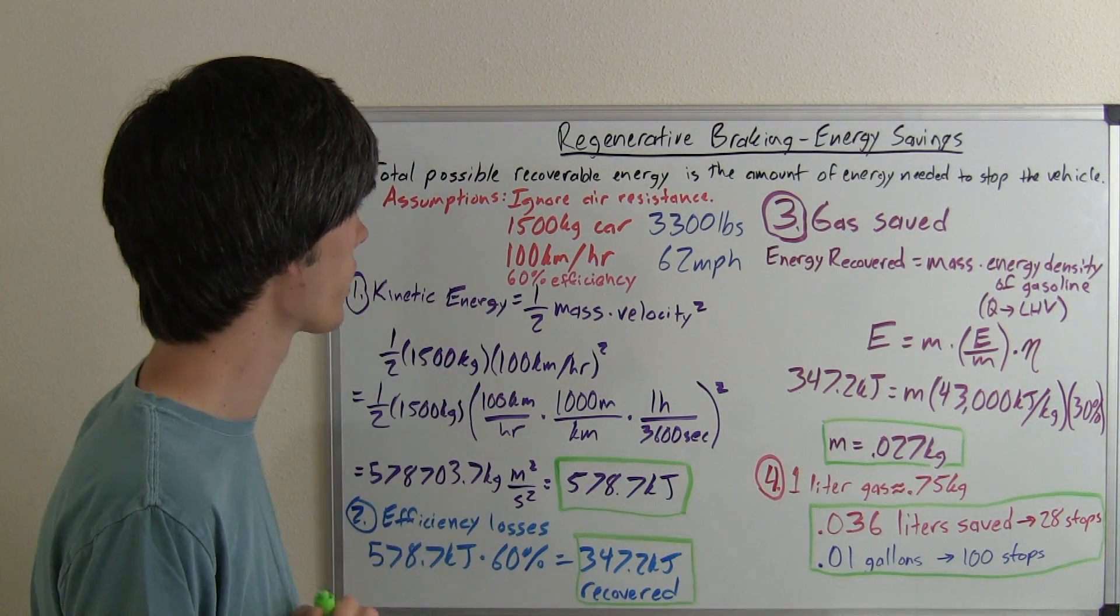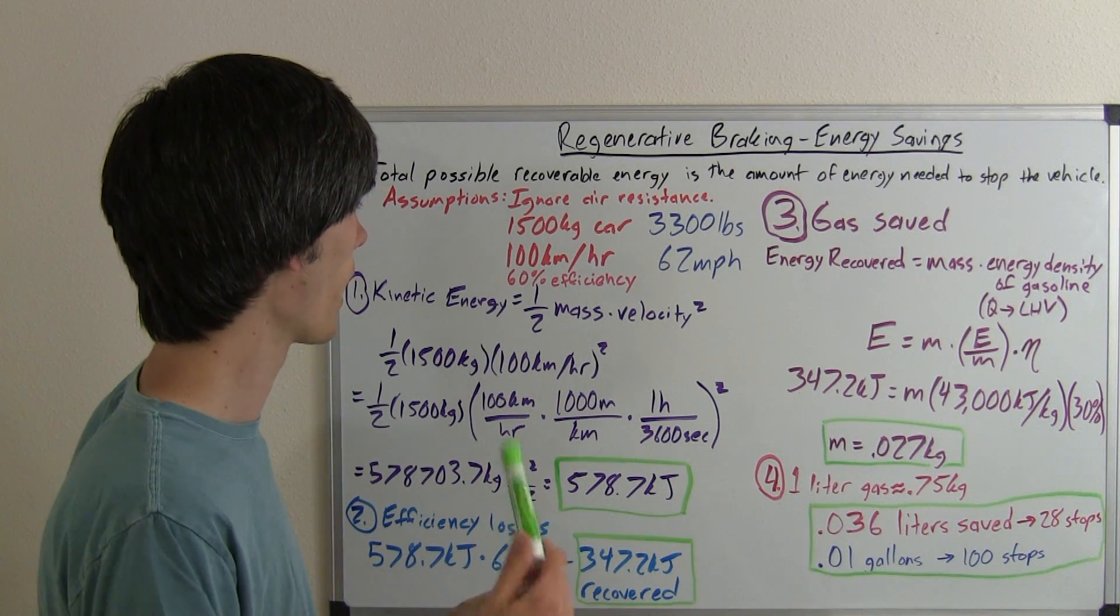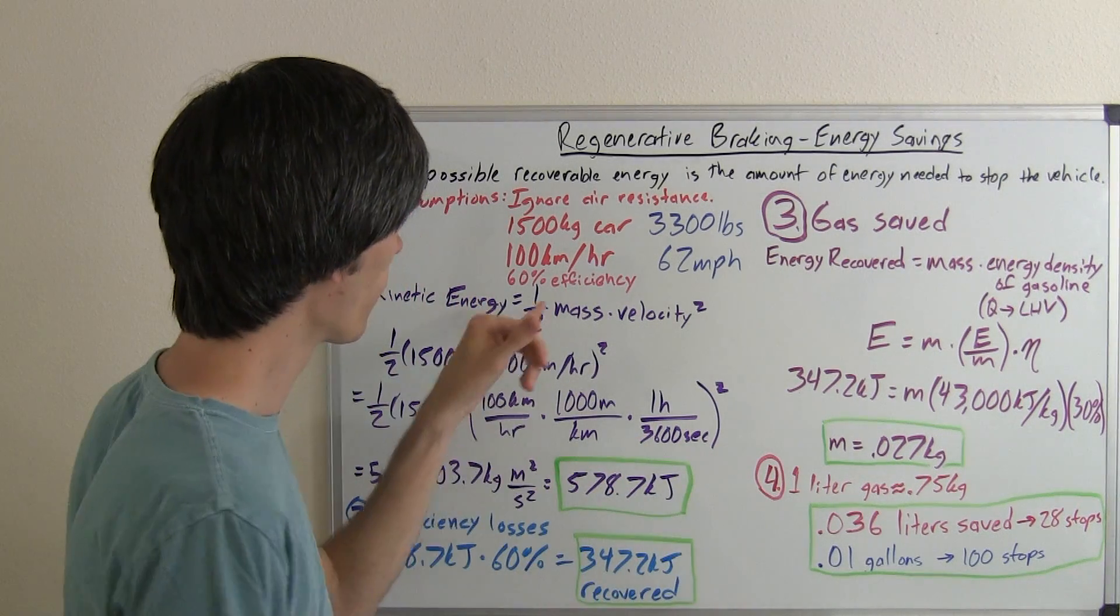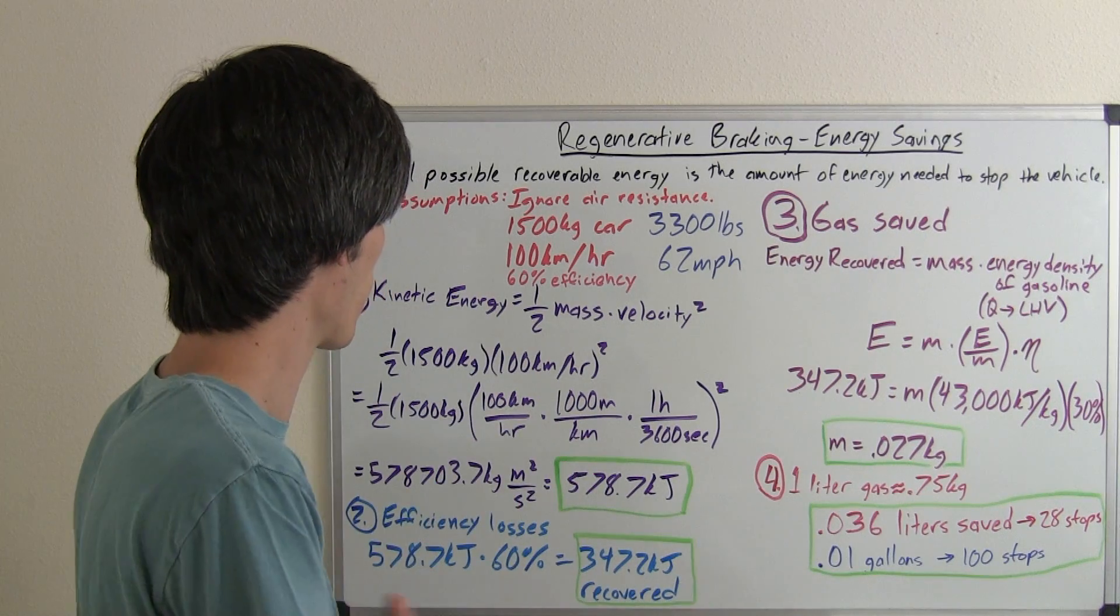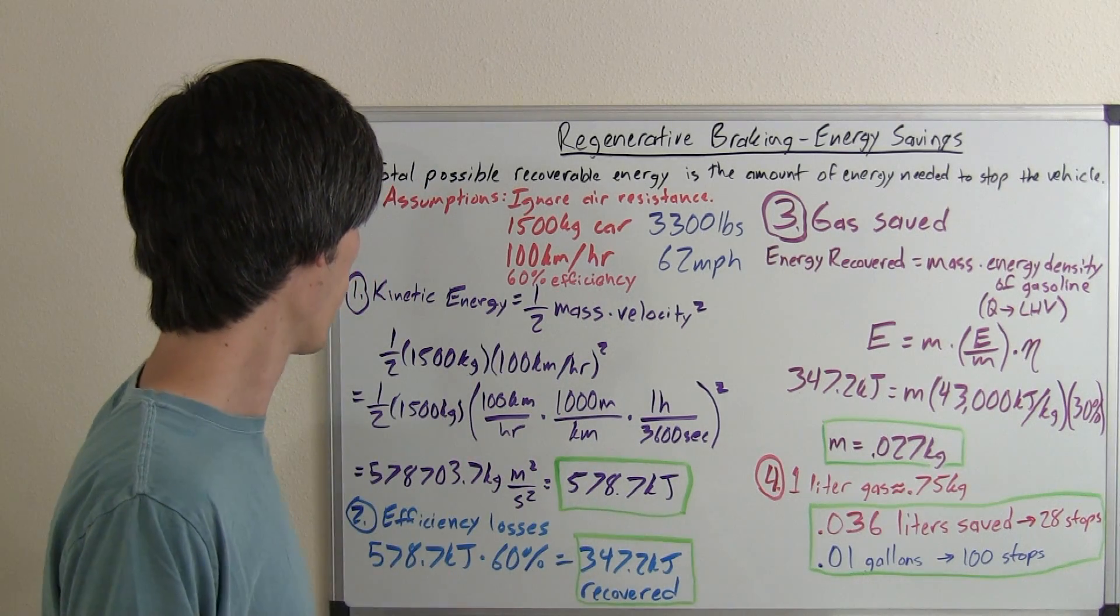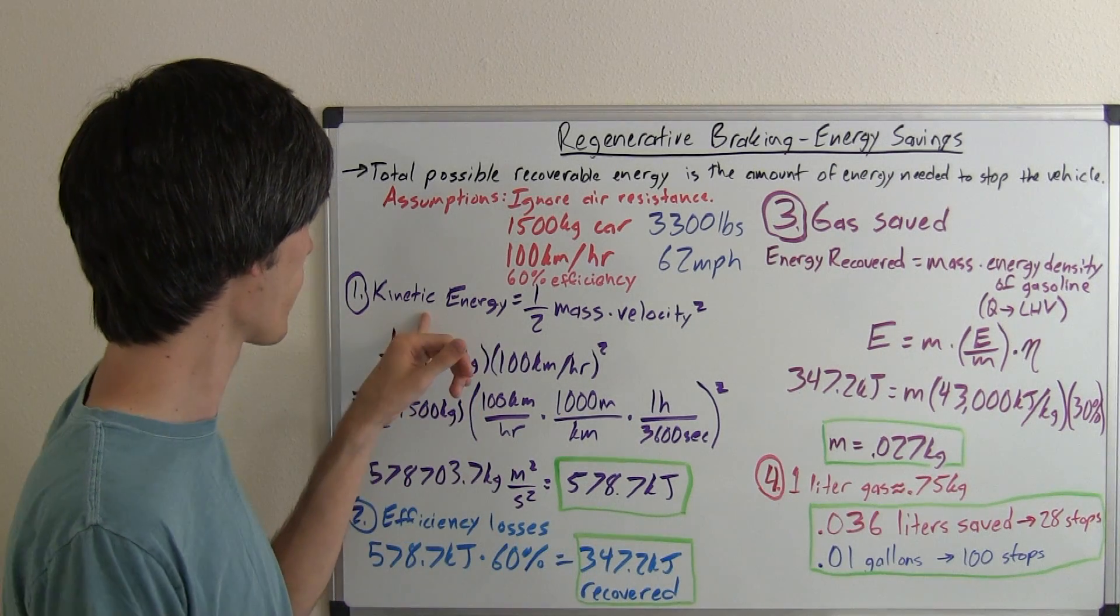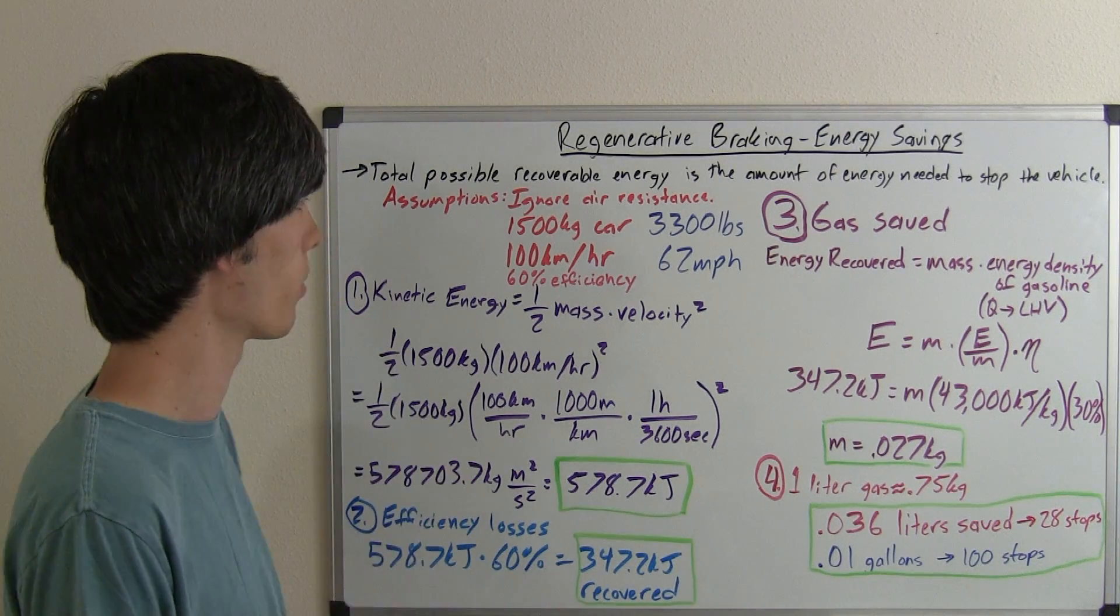We're going to say that we have a 1500 kilogram car that's traveling at 100 kilometers per hour, and we're going to say that our regenerative braking system is about 60%. There are systems that are much more efficient than this and systems that are much less efficient than this. So I just went with a basic 60%. Kinetic energy, of course, equals one half mass times velocity squared. That's our first step.